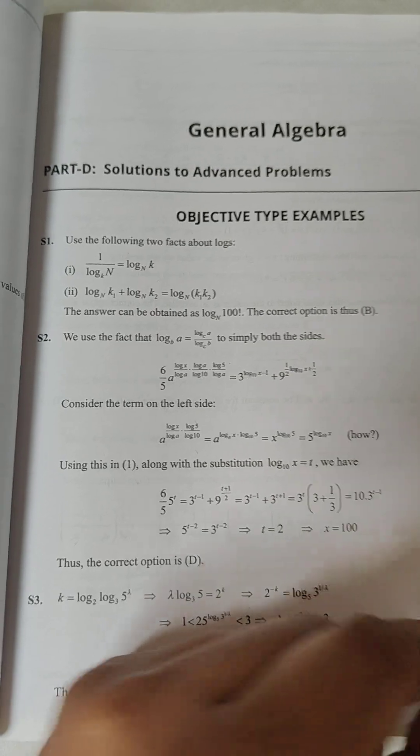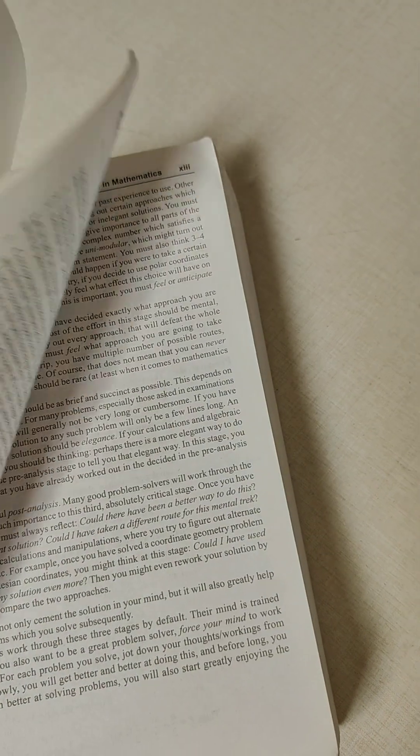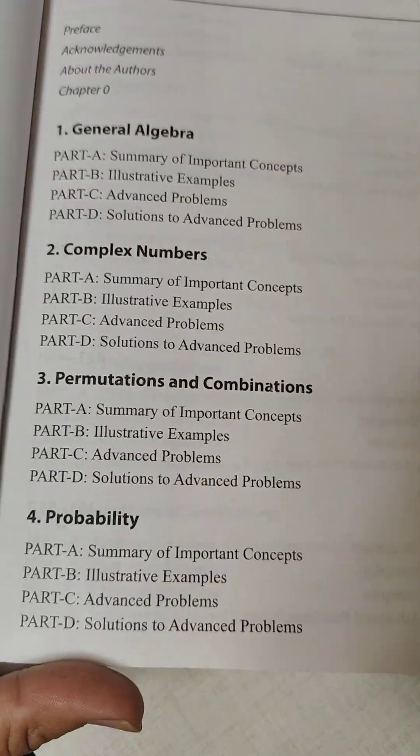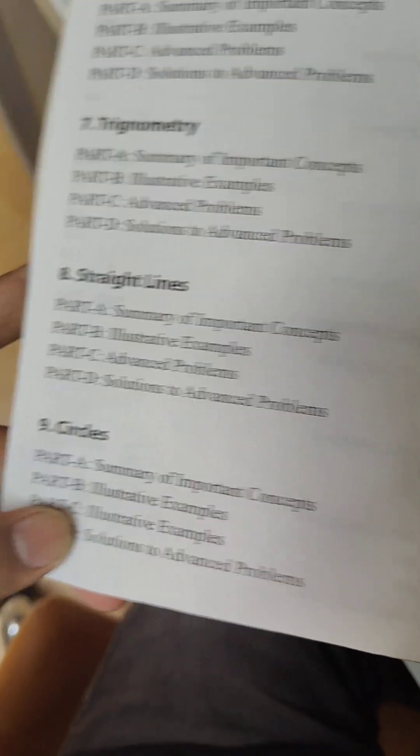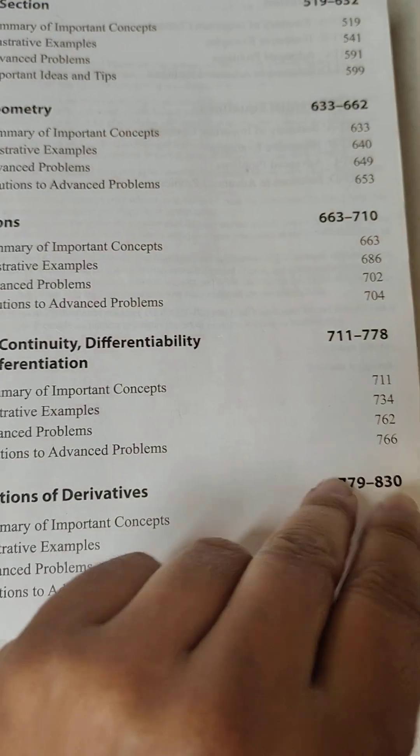So if we go back and see the contents once again, the contents are: general algebra, complex numbers, permutations, combinations, probability, determinants, vectors, straight line, circles, conic sections, and here calculus starts, and the last is differential equations.